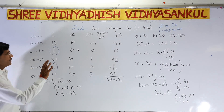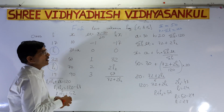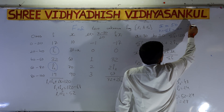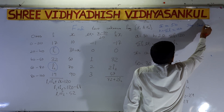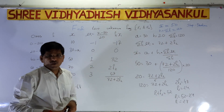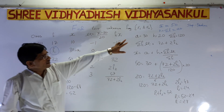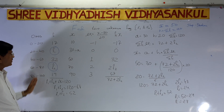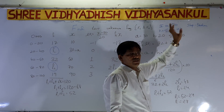Second step: for unknown frequency problems, always use the step deviation method. Whenever you have to find unknown frequencies, always do it by the step deviation method. The total frequency sigma fi is 120.